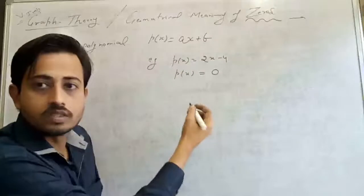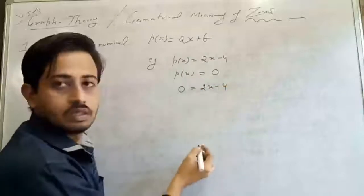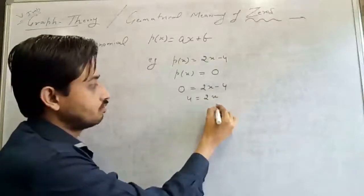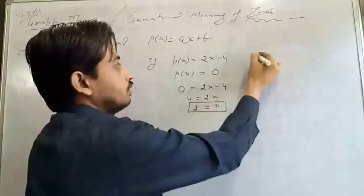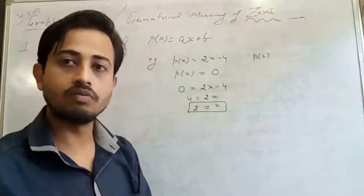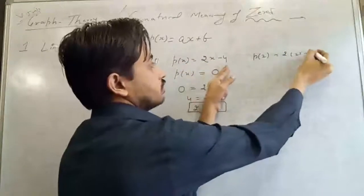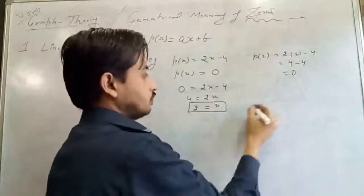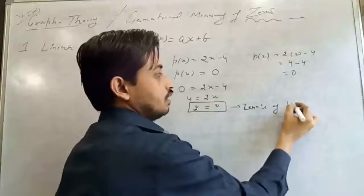As we already discussed, the value of x at which the polynomial becomes zero is called the zero of the polynomial. I'm taking the example p(x) = 2x − 4. We put p(x) = 0, which gives 2x = 4, so x = 2. That means if I put x = 2 in the polynomial: 2×2 − 4 = 4 − 4 = 0. So 2 is the zero of this linear polynomial.